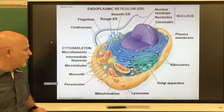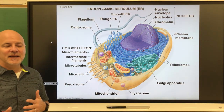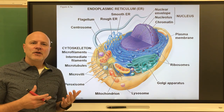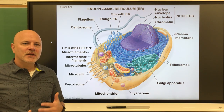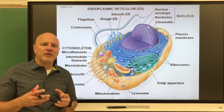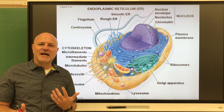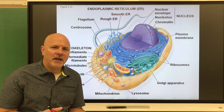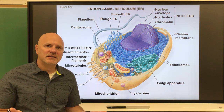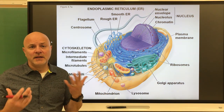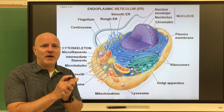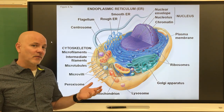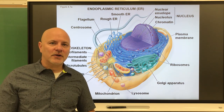Next are peroxisomes — vesicles that contain enzymes that break down poisons. The prefix 'perox' refers to peroxides. Through our metabolism we produce peroxides and alcohols, and peroxisomes absorb those poisons so they don't develop to toxic levels. Hydrogen peroxide, for example, kills bacteria; alcohols in mouthwashes and hand sanitizers like Purell do the same. Peroxisomes prevent the accumulation of those toxins inside the cell.